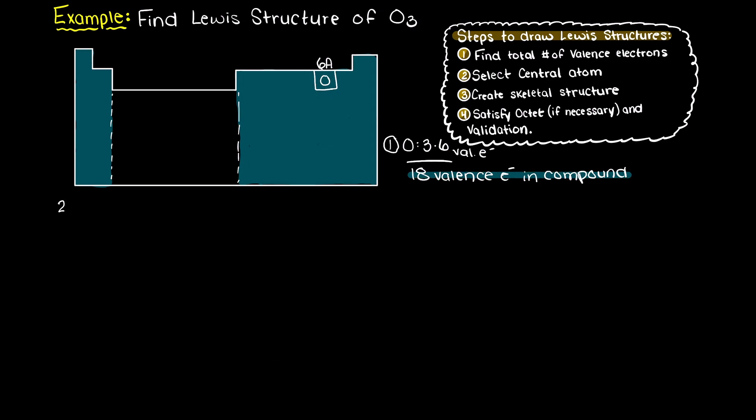Next we need to find what is going to be our central atom. Well, in this particular example we just have 3 identical atoms, therefore selecting a central atom is trivial and is completed for us.